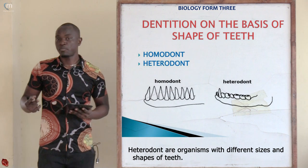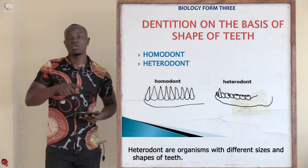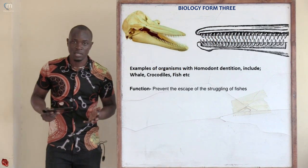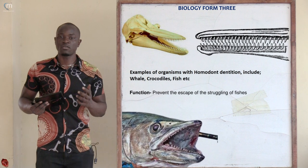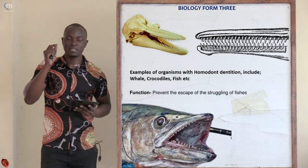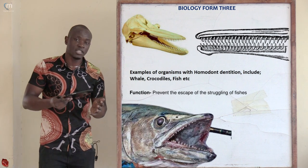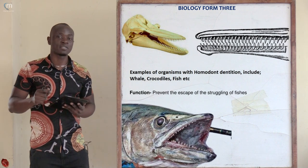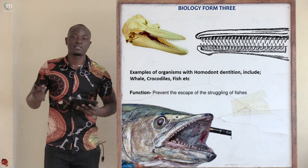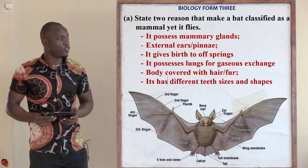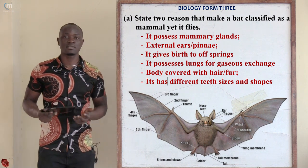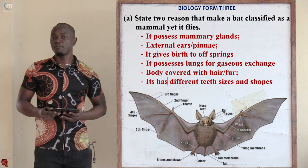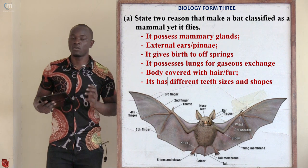In the topic of nutrition, under teeth, the opposite of heterodont is homodont. The most common homodonts are fish — their teeth are all uniform in size and shape. Bats and all mammals are heterodonts because their teeth have different sizes and shapes. Lastly, the bat also possesses lungs used for gas exchange. All these points support that the bat is a mammal.